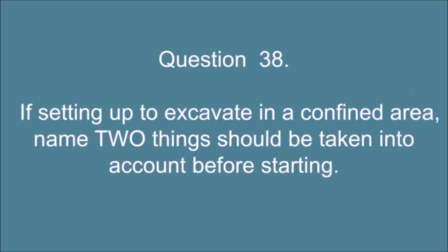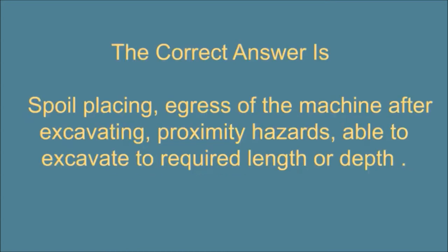Question 38. If setting up to excavate in a confined area, name two things should be taken into account before starting. The correct answer is: spoil placing, egress of the machine after excavating, proximity hazards, able to excavate to required length or depth.